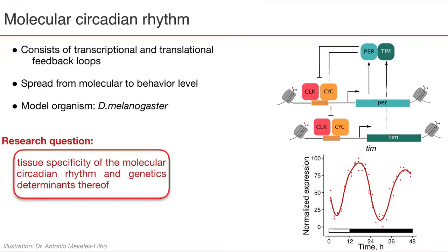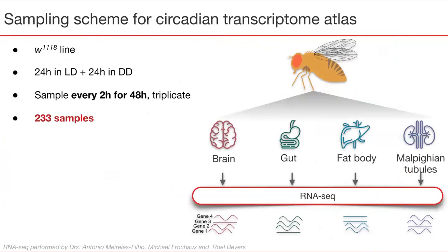In order to understand why the shortcut is important, one needs to understand the scale of classical experimental setups in circadian biology. As an example application of the classical scheme, I would like to demonstrate the creation of an atlas of tissue-specific circadian transcriptome.